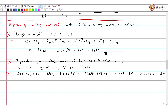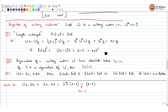For another one-line proof of the same idea: take U x dot U x, which equals lambda x dot lambda x. This equals lambda bar times lambda times x dot x, which also equals x dot x. This implies lambda times lambda bar equals 1.